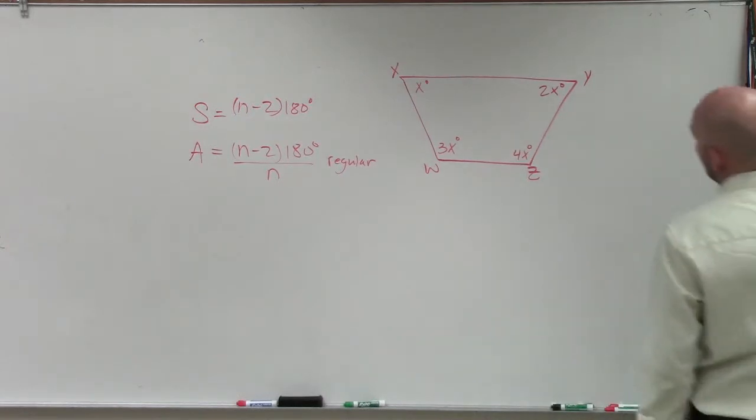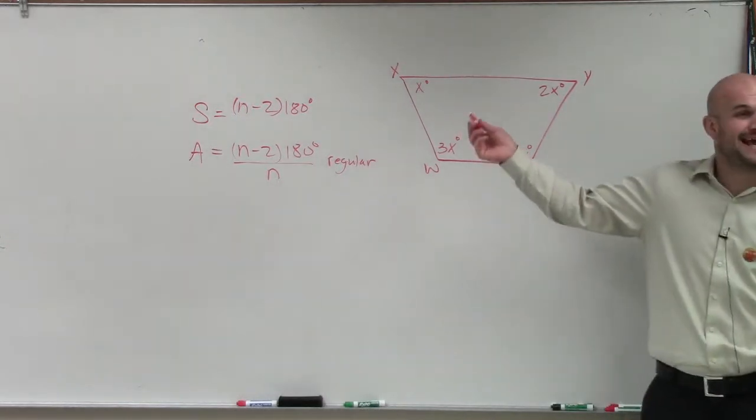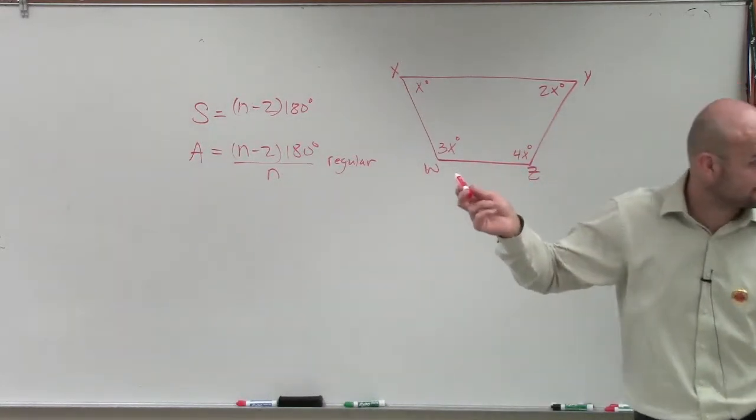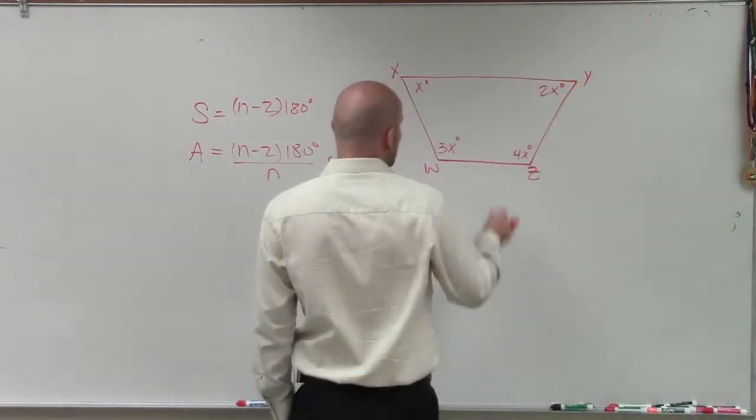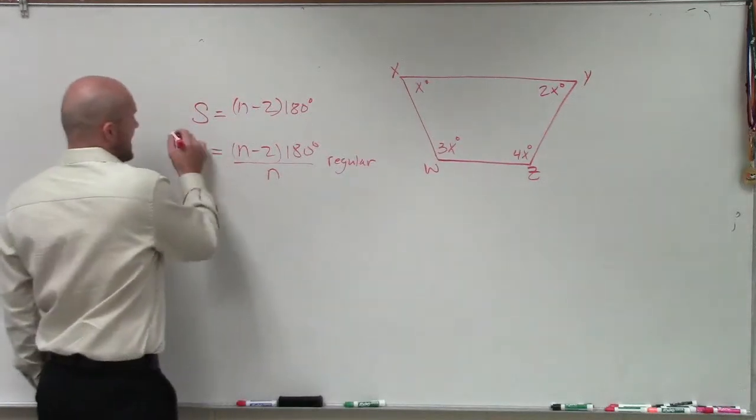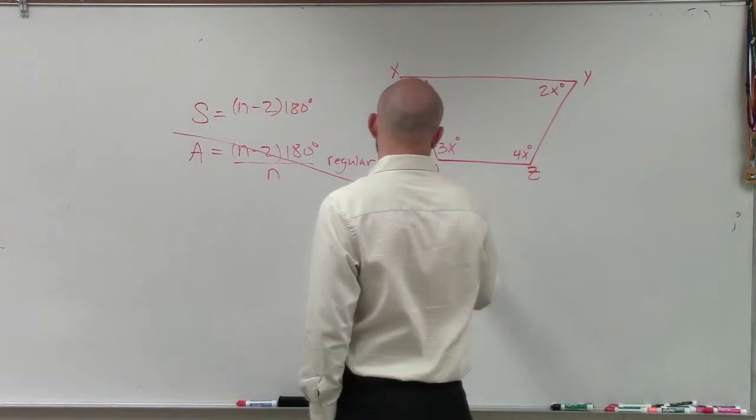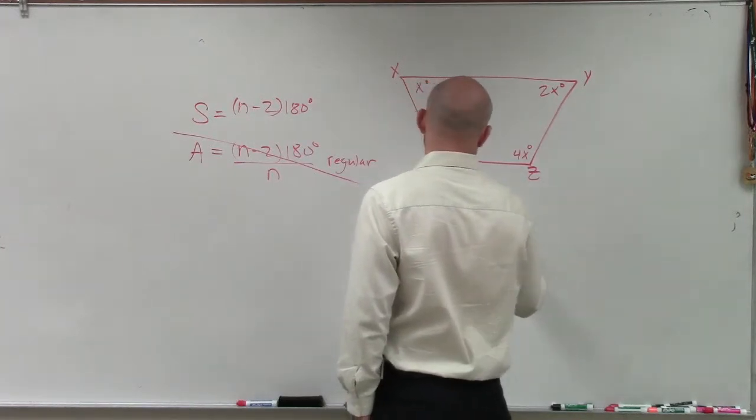So Daryl, are all the side lengths and all the angles in this polygon exactly the same? So this is not regular, right? So since it's not regular, we cannot use this formula. Therefore, we only have one formula that we need to use right now to help us with this problem.